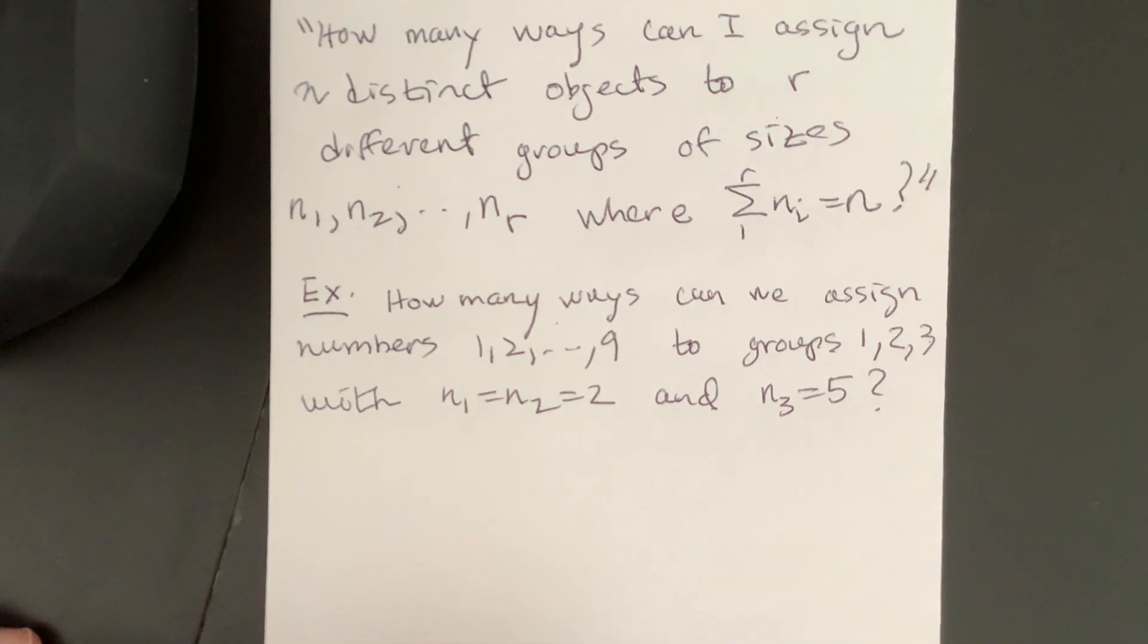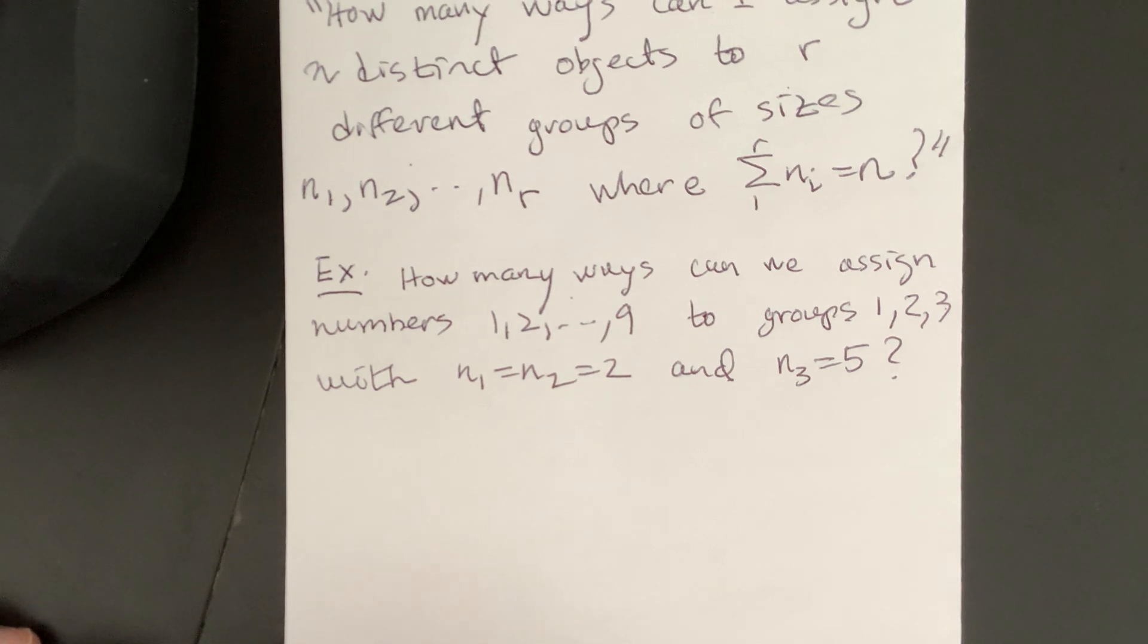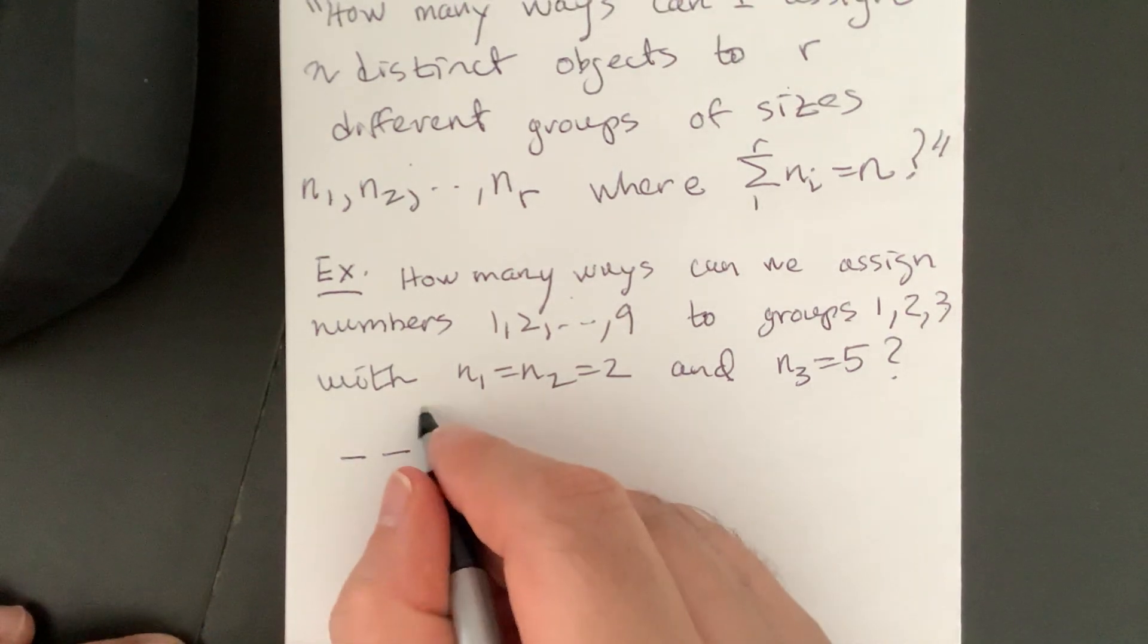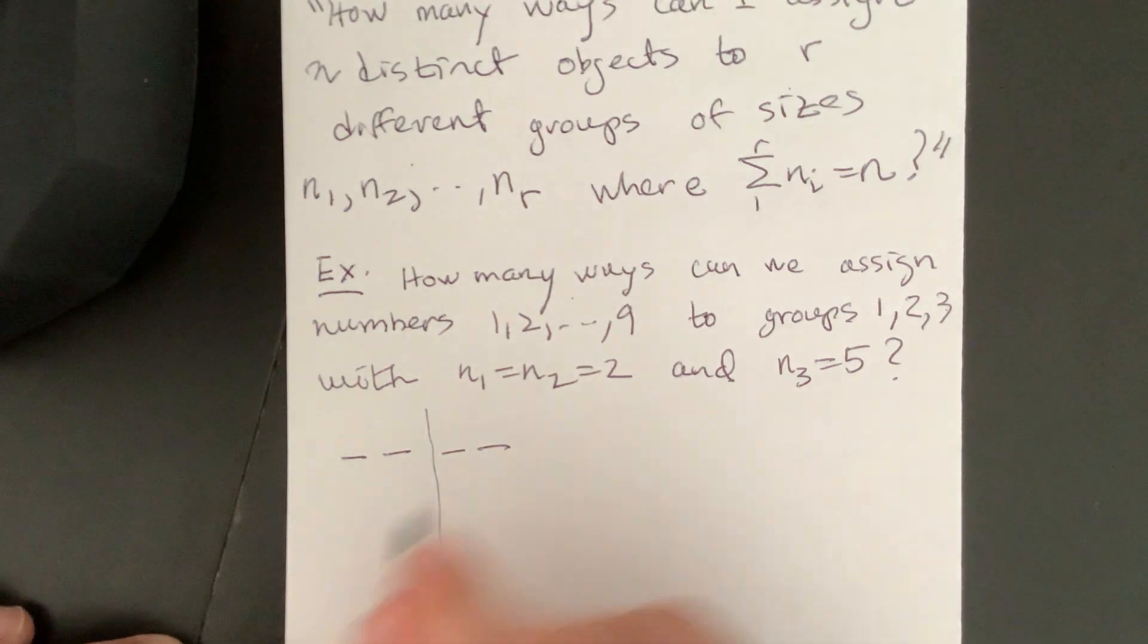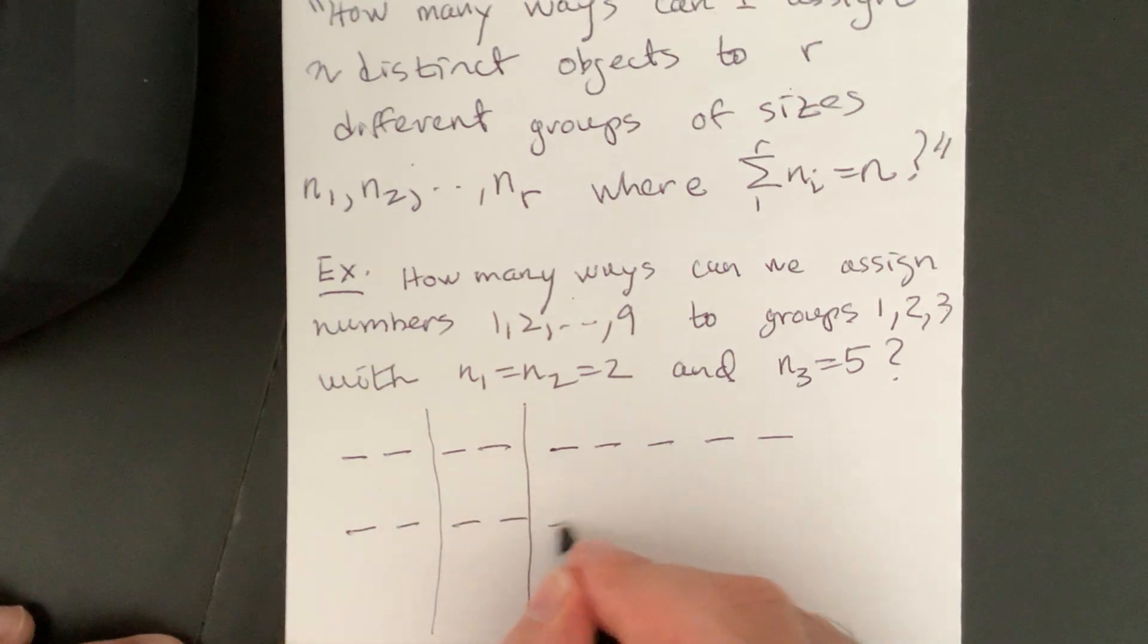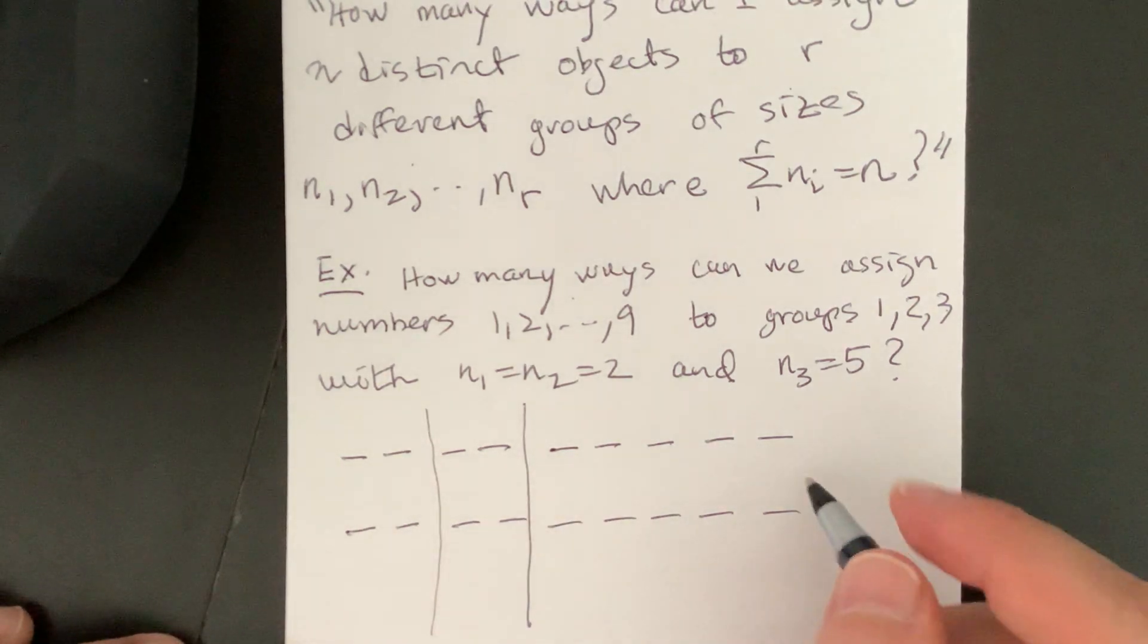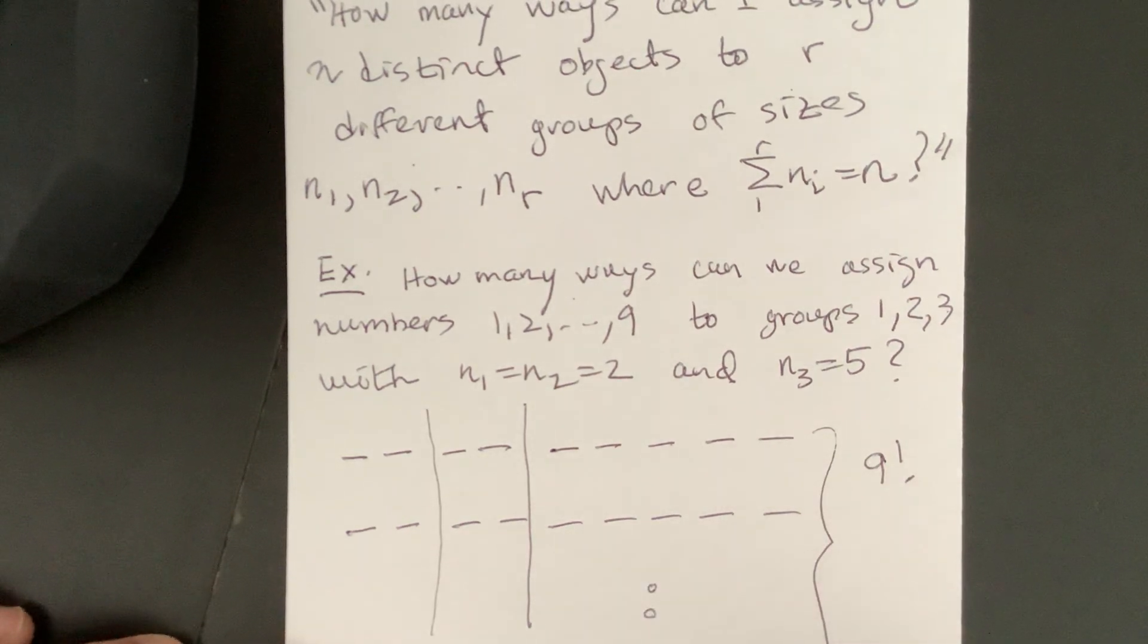Okay, so this is a multinomial problem. Okay, so what I propose is we could look at it like this, make all the arrangements, and we'll just consider this to be like a partition. If you fall in here, you're assigned to the first group. If you fall in here, you're assigned to the second group. And here's the big group. Okay, well, there's 9 factorial of these, so 9 factorial total arrangements, you know, if we keep going. But a lot of them are going to be the same.